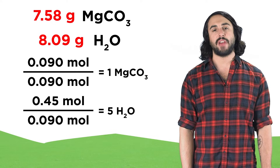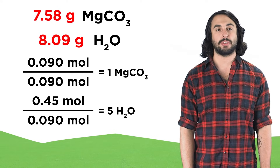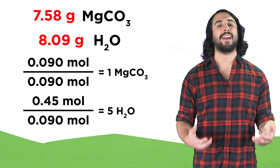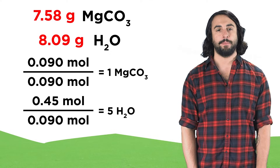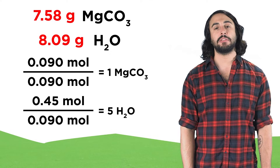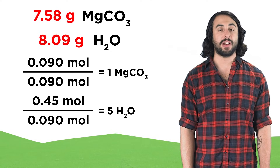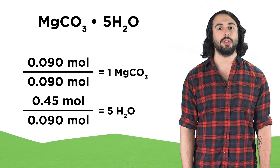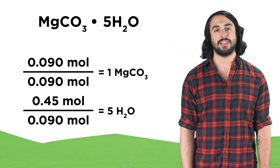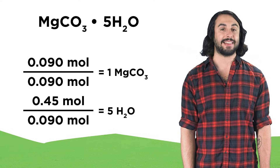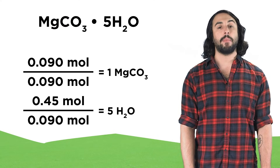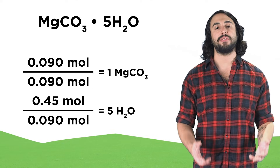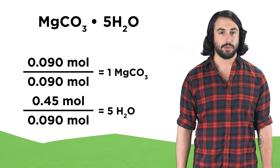Dividing both of these values by the smaller of the two will give us their ratio, which we can clearly see is 1 to 5. That means that for every formula unit of the magnesium carbonate in the lattice, there must have been precisely five water molecules.